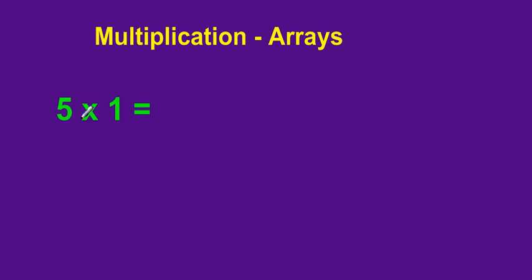Let's look at another example. 5 times 1. Now we're going to think of this as 5 rows by 1 column.